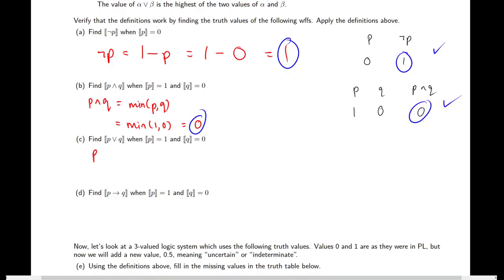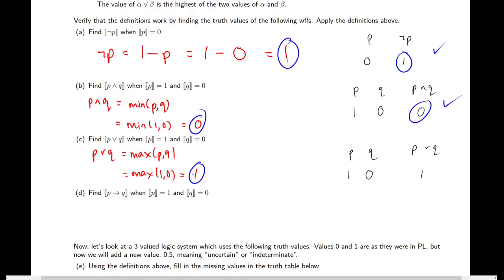For P OR Q, we take the maximum of P and Q. The maximum of 1 and 0 is 1. Comparing to our regular truth tables: if P is 1 and Q is 0, at least one is true so P OR Q is true — and they match. If we checked every single case we'd find this works too, but let's just check one case to show it works.